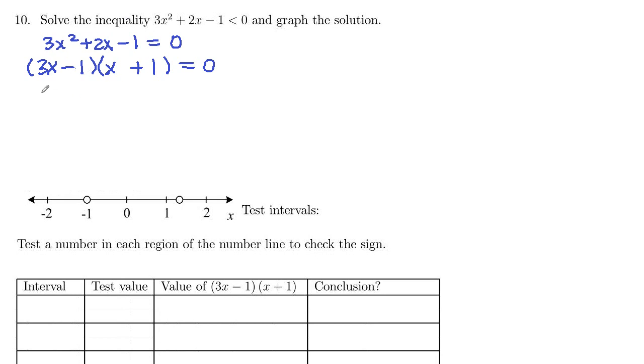So if a product equals 0, either the first factor is equal 0, 3x minus 1 equals 0, or x plus 1 is equal 0. In this case, add 1 to both sides so that 1 comes over as a positive, 3x equals 1. Then divide both sides by 3, so x equals 1 third.